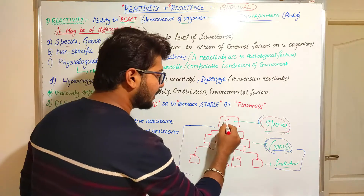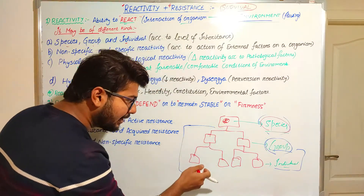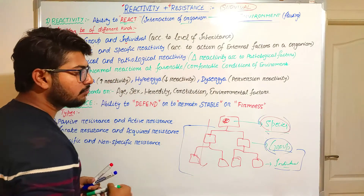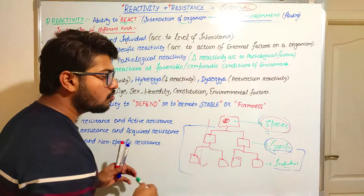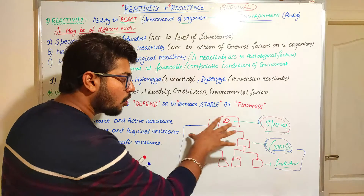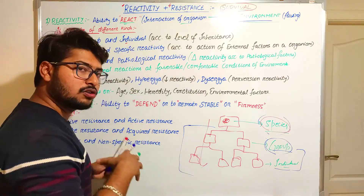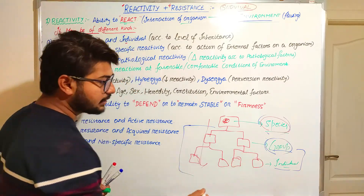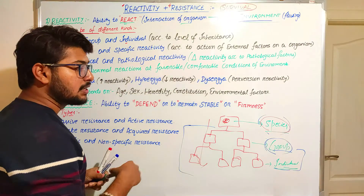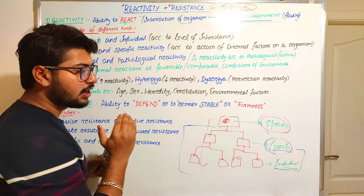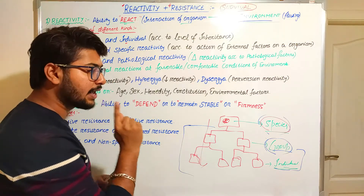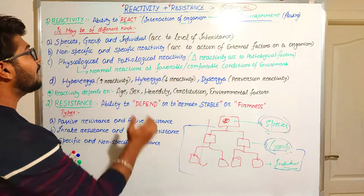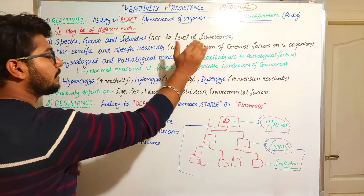Similarly, if a group has a character, then the individuals below that group will also have the same character. But if an individual has a personal character, that will remain in that individual only — it will not be present in the whole group, and it will not be present in the species. So reactivity is divided according to the level of inheritance: how a disease, character, or gene is inherited from top to bottom.